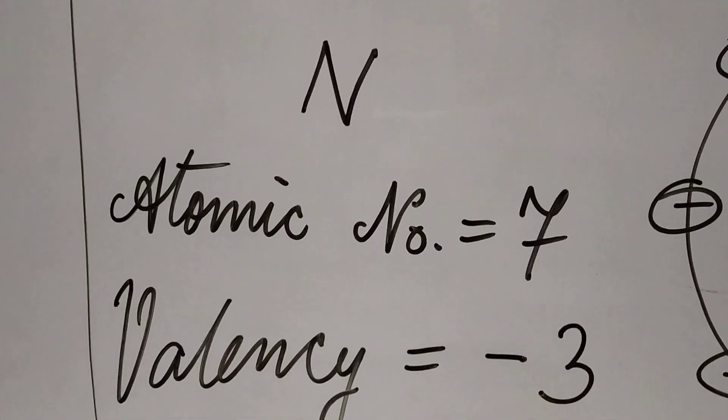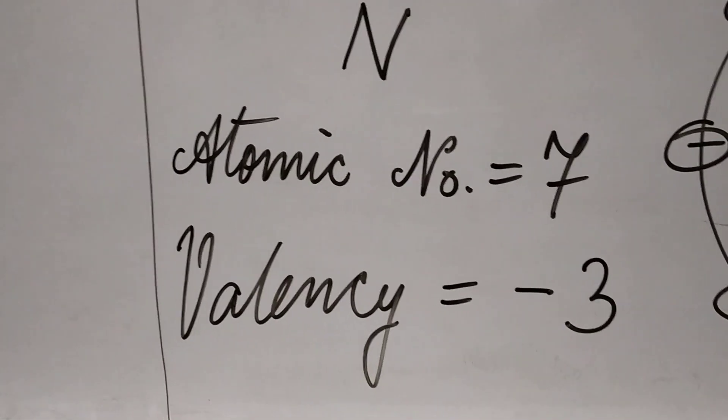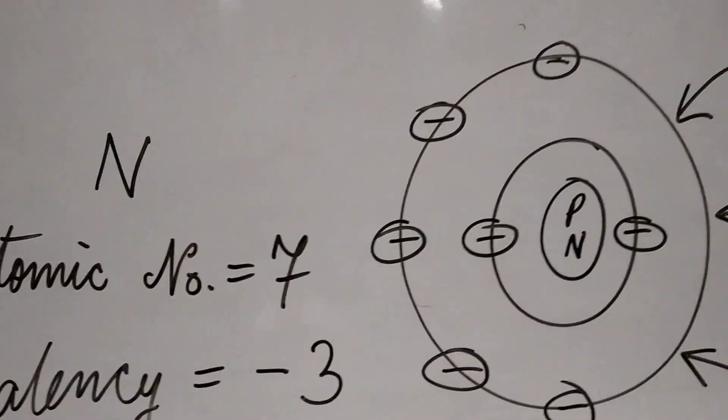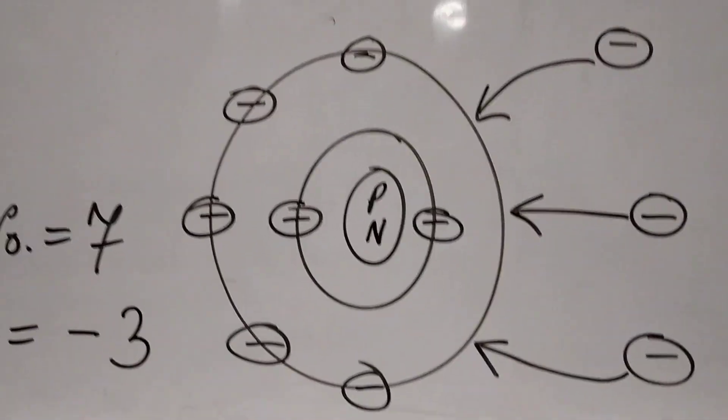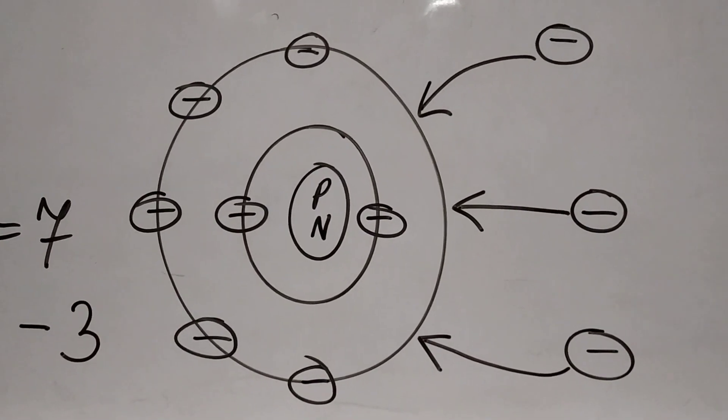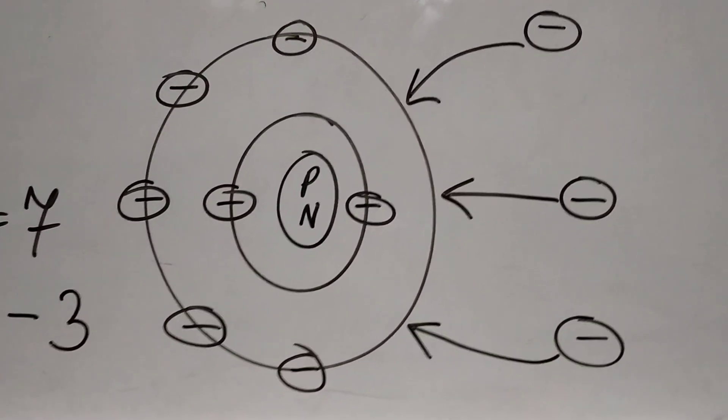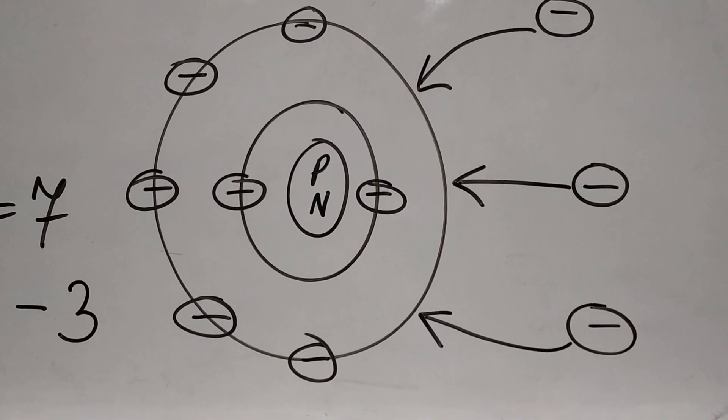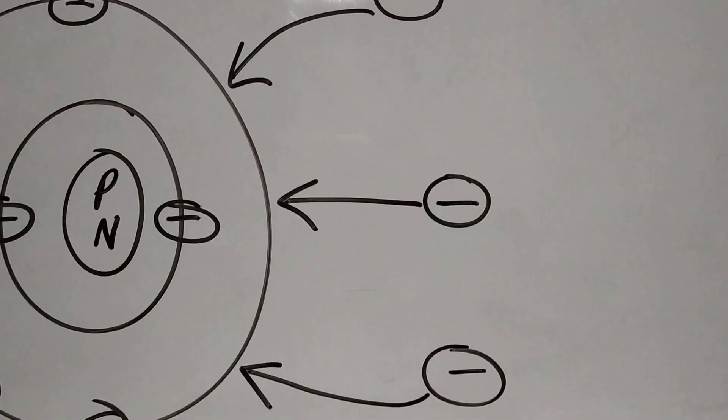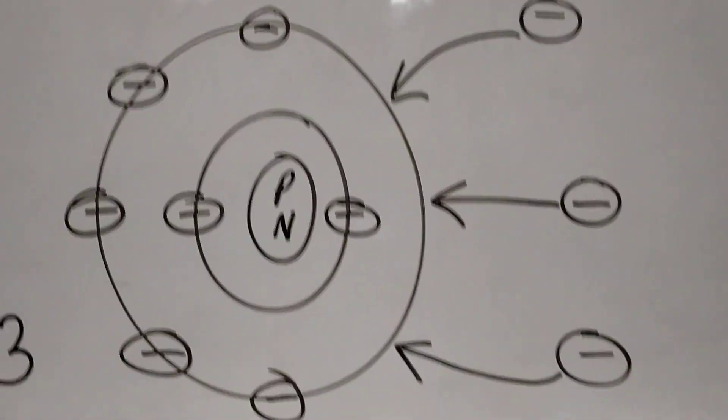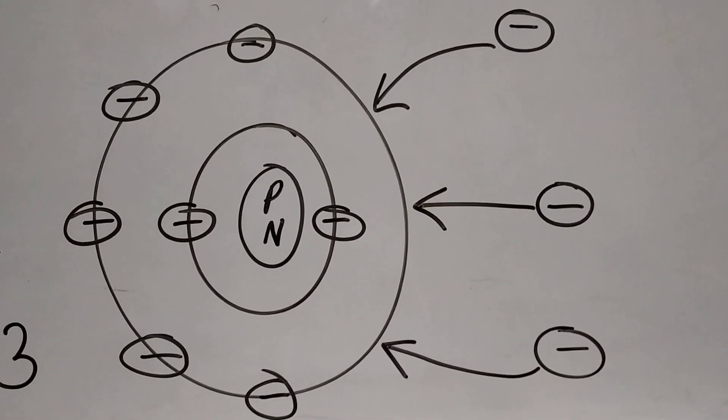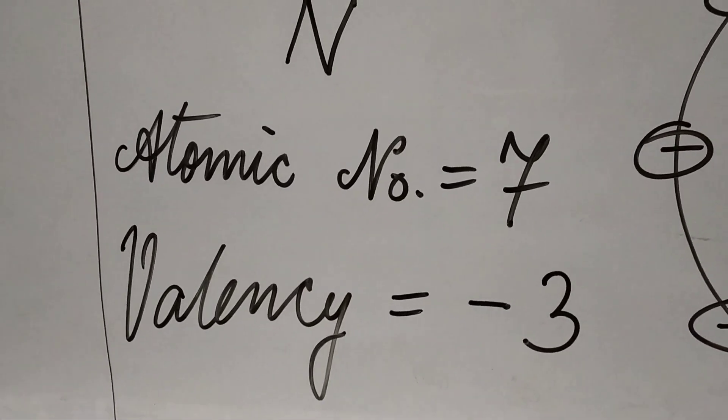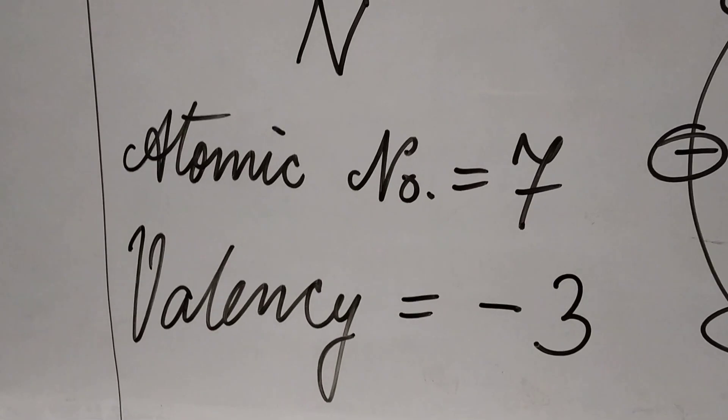Another example is nitrogen, atomic number seven. The valency is minus three. How? First orbit has two electrons, second orbit has five electrons. It is easier for this atom to gain three electrons rather than giving away five electrons. So when it gains three electrons, the overall charge becomes negative three because three electrons have entered. So the valency of nitrogen is negative three.